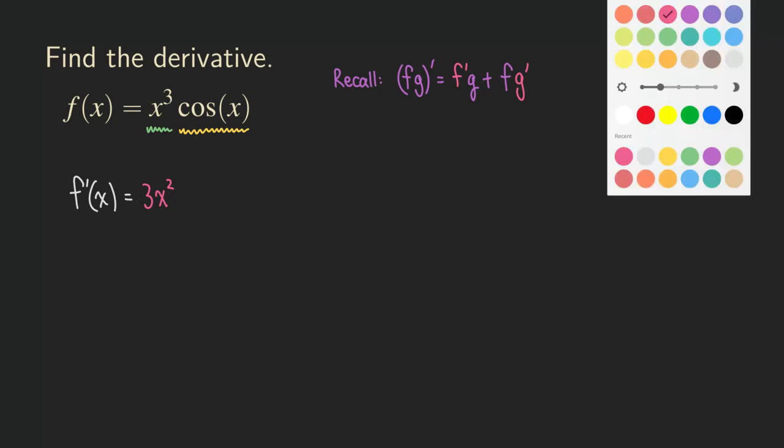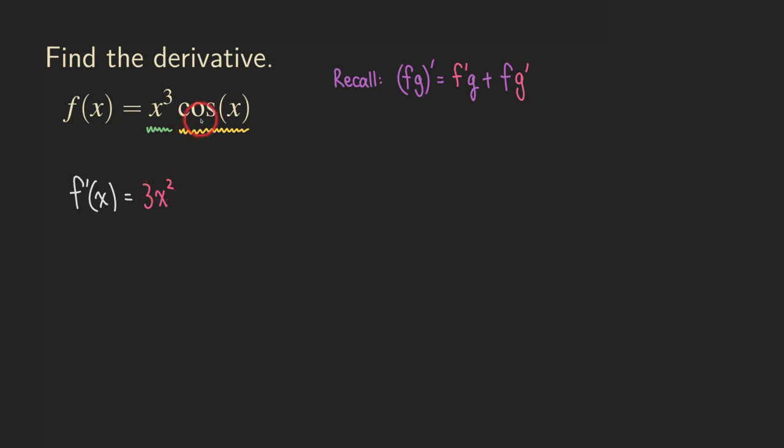And then for the second function, just copy. So just copy the cosine x. And then plus, right? Remember we are adding. Sometimes it will change to a minus sign because sometimes the factors can have a negative sign.